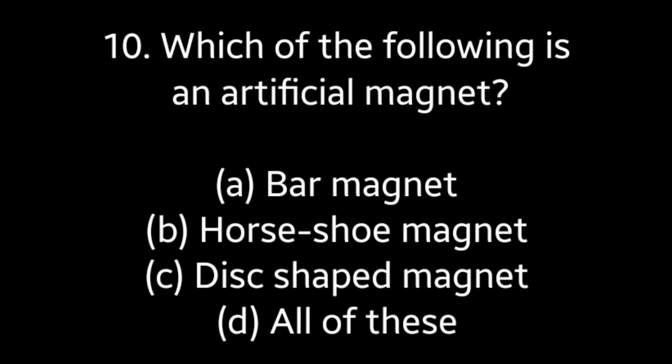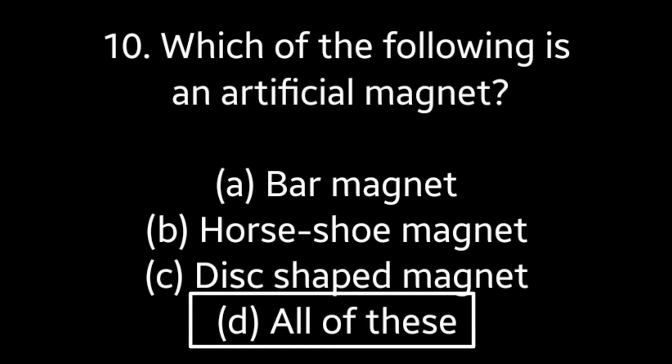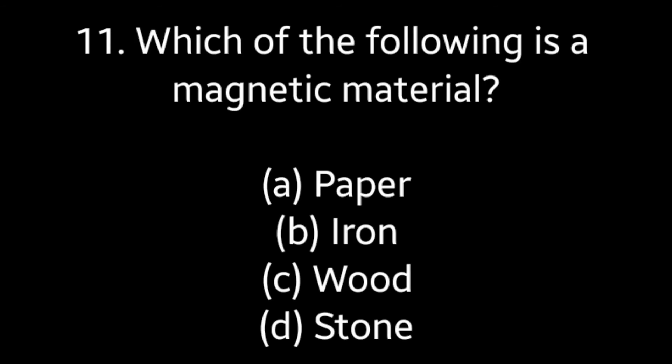Question number ten: which of the following is an artificial magnet — bar magnet, horseshoe magnet, disc-shaped magnet, or all of these? Answer is option D: all of these. Question number eleven: which of the following is a magnetic material — paper, iron, wood, or stone? Answer is option B: iron.